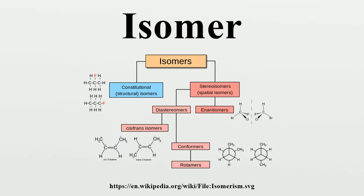While structural isomers typically have different chemical properties, stereoisomers behave identically in most chemical reactions, except in their reaction with other stereoisomers. Enzymes, however, can distinguish between different enantiomers of a compound, and organisms often prefer one isomer over the other. Some stereoisomers also differ in the way they rotate polarized light.